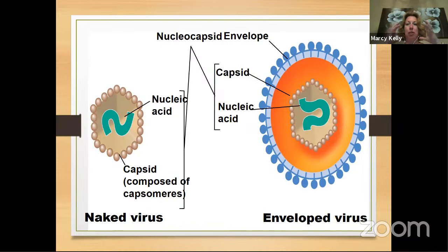The outer shell is derived from the host cell membrane, and then what the virus does is put its own proteins on that outer shell as well. That's an enveloped virus.